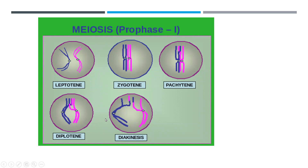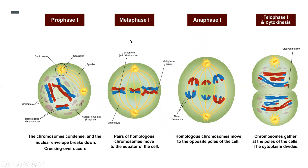After prophase 1 comes metaphase 1, where pairs of homologous chromosomes move to the equator. In anaphase 1, the homologous chromosomes move towards opposite poles. In telophase 1, after cytokinesis, two daughter cells are formed. In meiosis 2, these two daughter cells undergo further division.